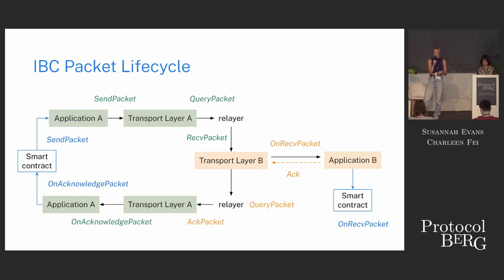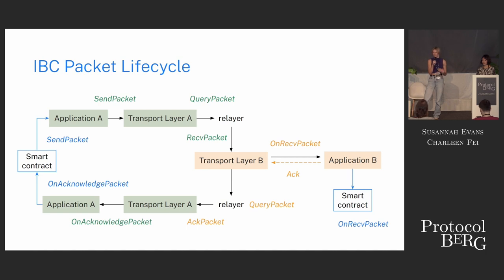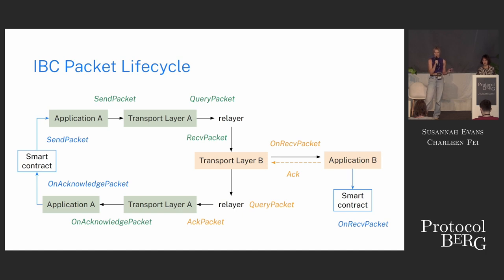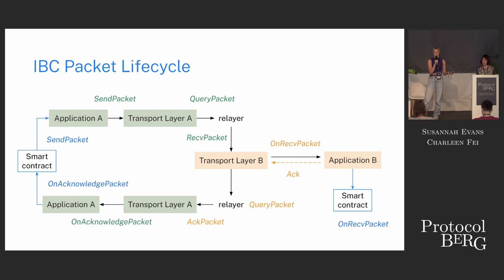One really nice thing about IBC is it has callbacks. Once the application has completed its logic — for a token transfer, you've locked the token on the origin chain and minted it on the counterparty — you then get an acknowledgement confirming the action completed successfully, or an error if it didn't. This acknowledgement is passed back to the sending chain. Additionally, you can have callbacks on the acknowledgement passed back to smart contracts, or on receive a callback to a smart contract, so the contract is aware the packet was received and can perform additional logic.